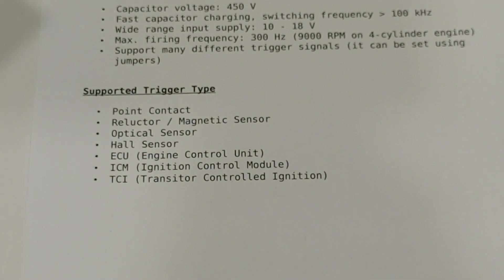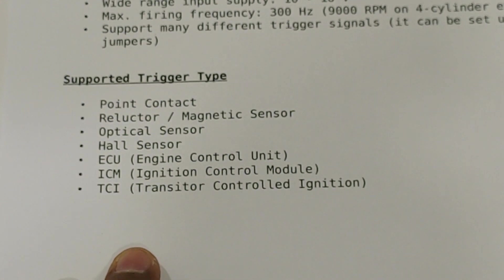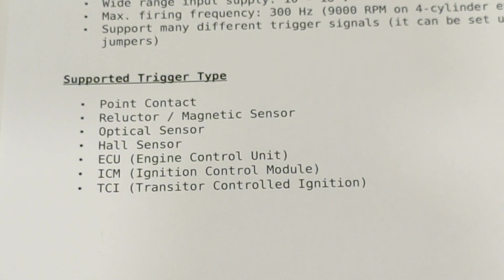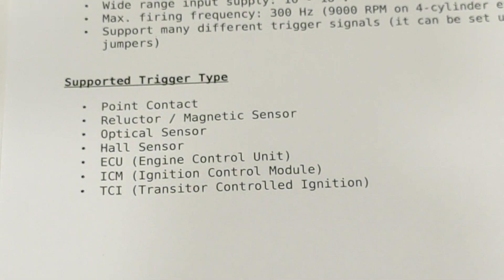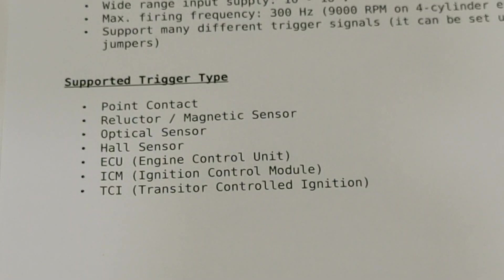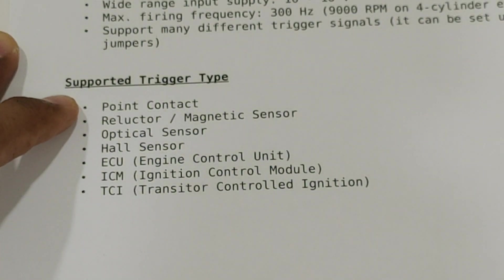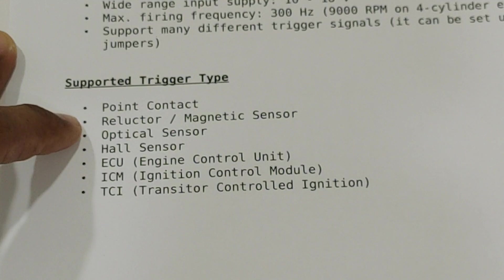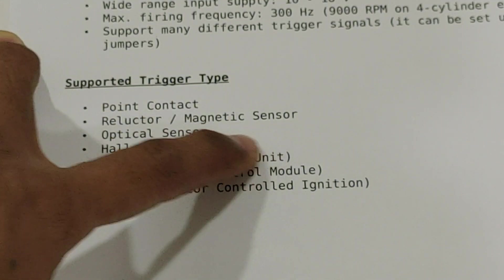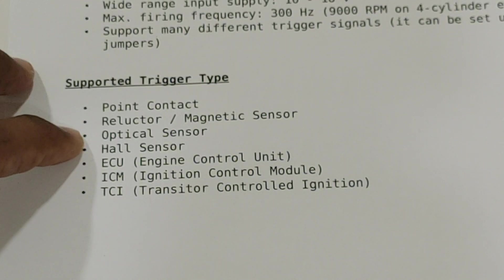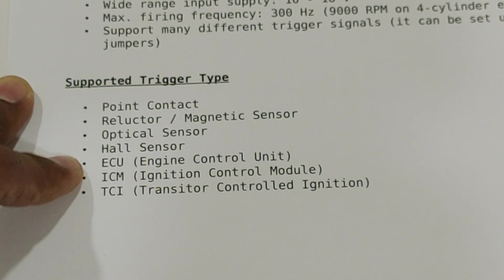Let's move on. The trigger type - this module can read different trigger signals. First is the contact point, second is the reluctor or magnetic sensor, and third is the optical sensor. Fourth is hall sensor, fifth signal from ECU or engine control unit.